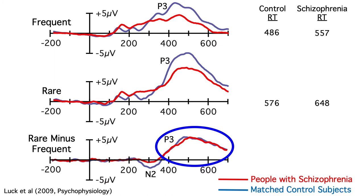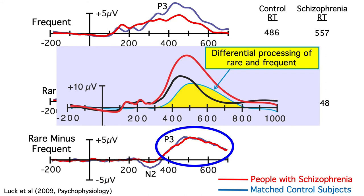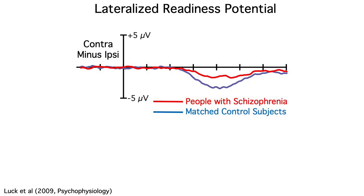We can use the logic of difference waves to draw a very strong conclusion from this study. Because you can't have a rare-frequent difference until you've perceived and categorized the stimulus, the finding of equivalent timing of the rare-frequent difference in people with schizophrenia and control subjects tells us that the two groups perceived and categorized the stimuli equally quickly. The difference in response time must therefore reflect some kind of post-categorization slowing, perhaps in response preparation or execution. Consistent with this hypothesis, we found a major disruption of the lateralized readiness potential in the schizophrenia group.